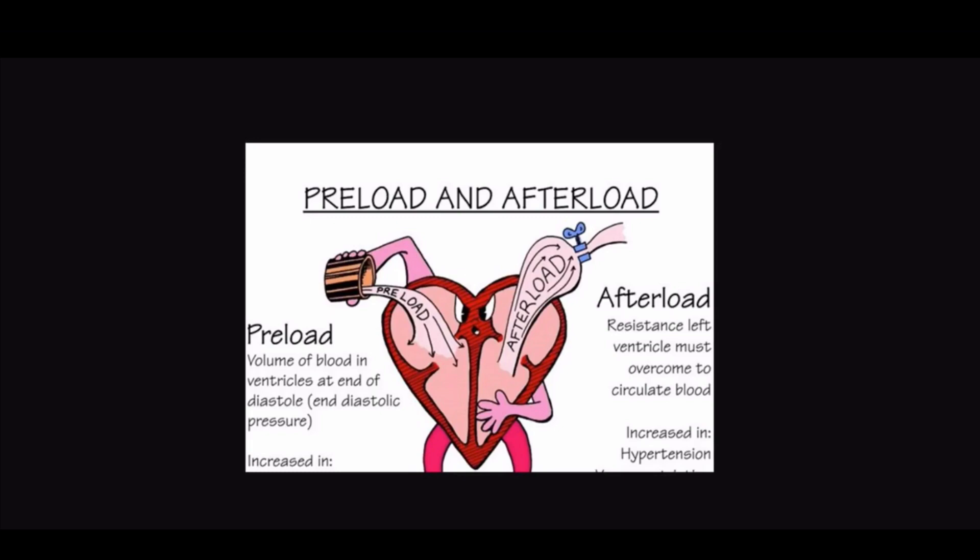Atrial arrhythmias can also decrease preload. With an atrial arrhythmia such as atrial fibrillation, the blood tends to be stagnant in the right atrium, which means not as much blood is going to enter into the right ventricle, because the right atrium is just fibrillating — it's not actually contracting. This would decrease preload.